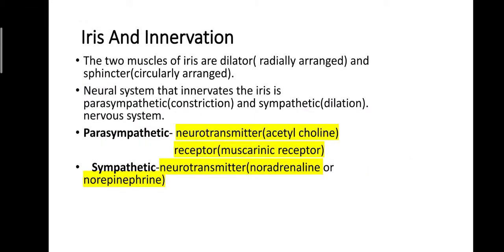The iris is the colored part of the eye and regulates the amount of light entering the eye. During bright light the iris constricts the pupil, whereas during dim light the iris dilates the pupil. The iris consists of two muscles: the dilator, which is radially arranged, and the sphincter, which is circularly arranged. They are innervated by the parasympathetic and sympathetic nervous systems.